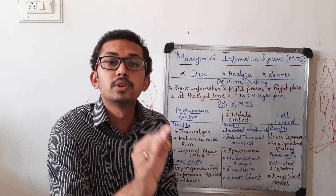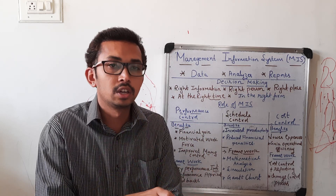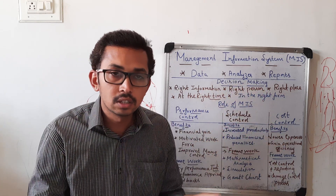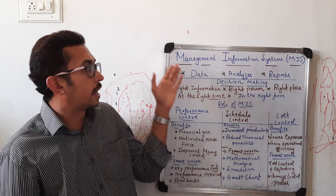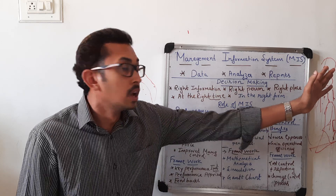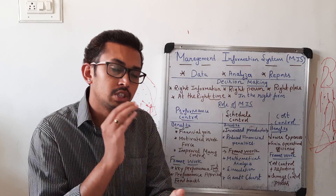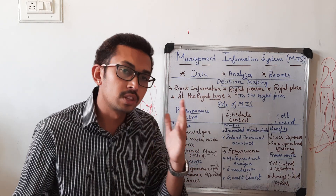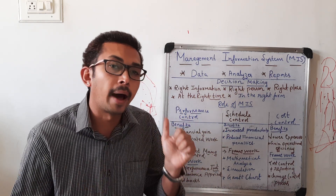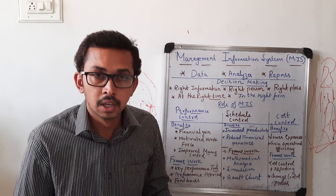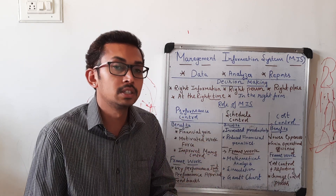Information is what helps us to take the right decision. To manage this information, we need one system — that is what we are going to call Management Information System, or MIS. MIS is a computer system which consists of both hardware as well as software, and it acts as a backbone for any organization.